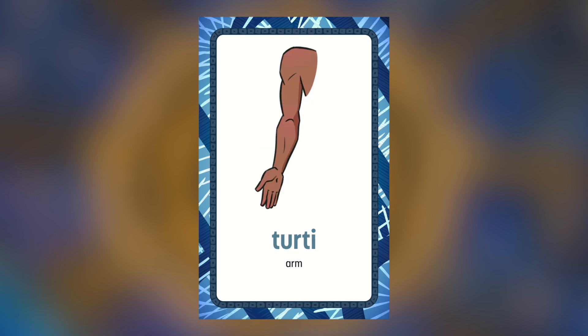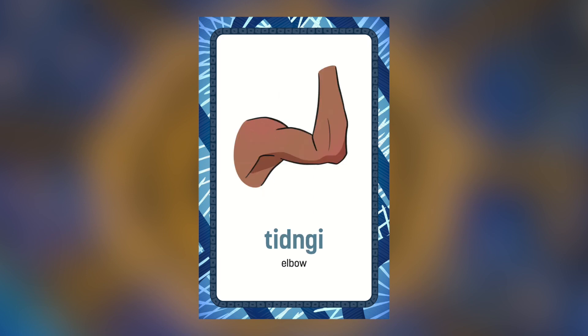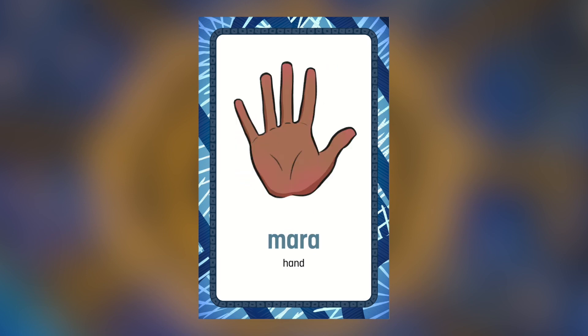Arm is tūtti — tūtti. Elbow is tītni — tītni. And mara is hand — mara.